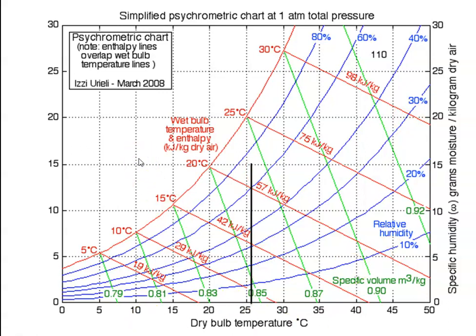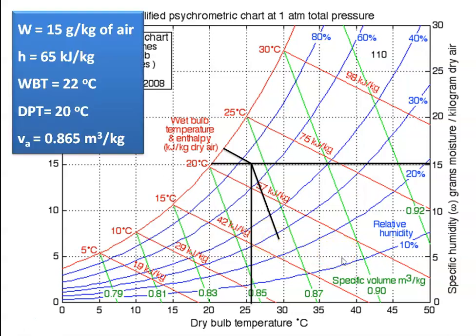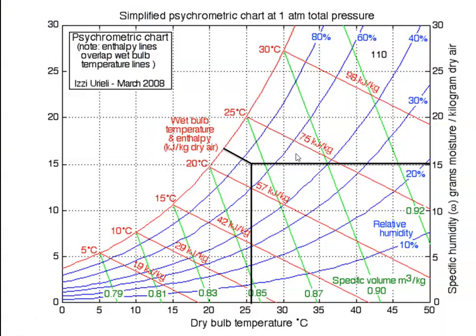The given condition is 26 degree Celsius and 70 percent relative humidity — it is between 60 and 80 percent. Locate the point, draw a vertical line using the scale and locate the point for 26 degree Celsius and 70 percent relative humidity. Draw the horizontal line to read the specific humidity, draw the inclined line to read the enthalpy and wet bulb temperature, draw the horizontal line to read the dew point temperature, and draw the inclined line along the green color line to read specific volume. Reading the values: specific humidity is 15 grams per kg of air, enthalpy H = 65 kilojoules per kilogram, WBT is 22 degree Celsius, dew point temperature is 20 degree Celsius, and specific volume is 0.865 meter cube per kilogram.